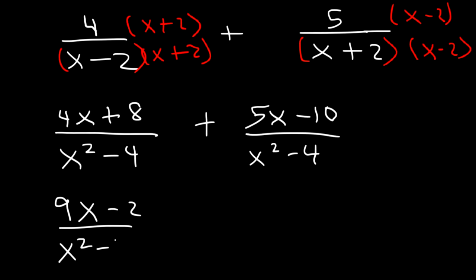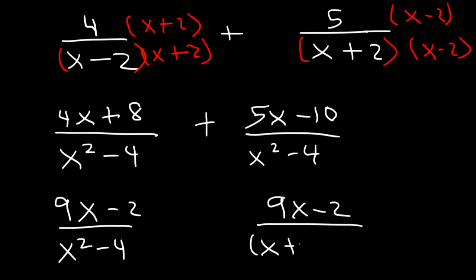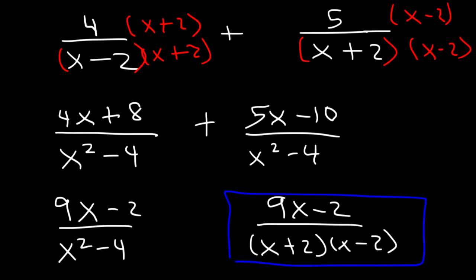So the answer is 9x minus 2 over x squared minus 4, which we can also write in complete factored form as 9x minus 2 over x minus 2 times x plus 2. That's it for this problem.